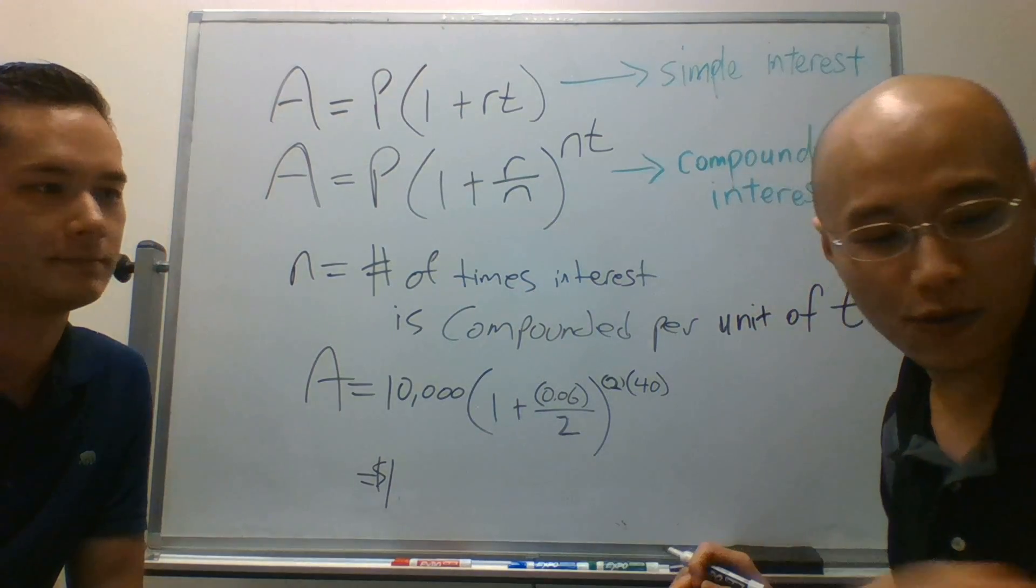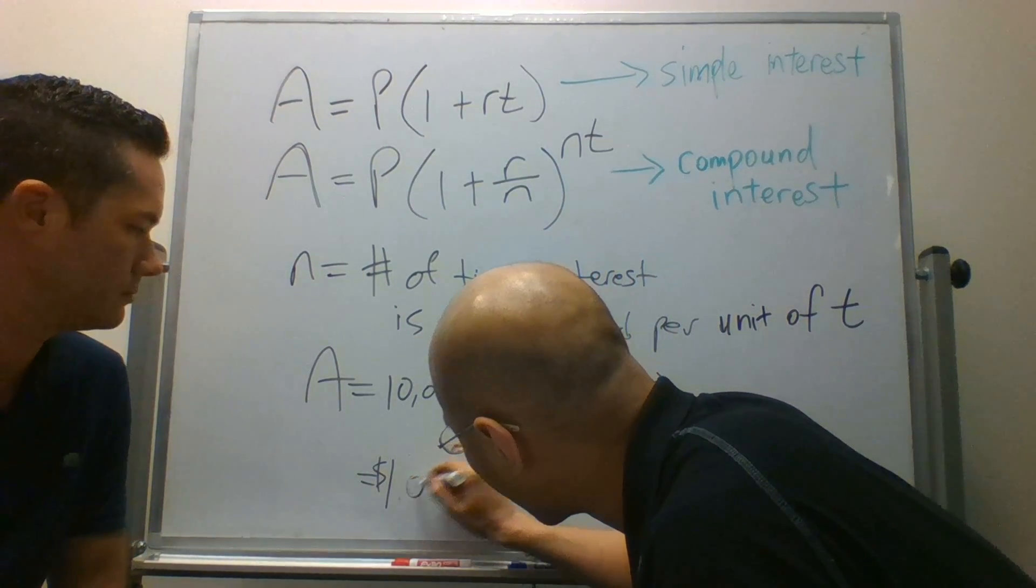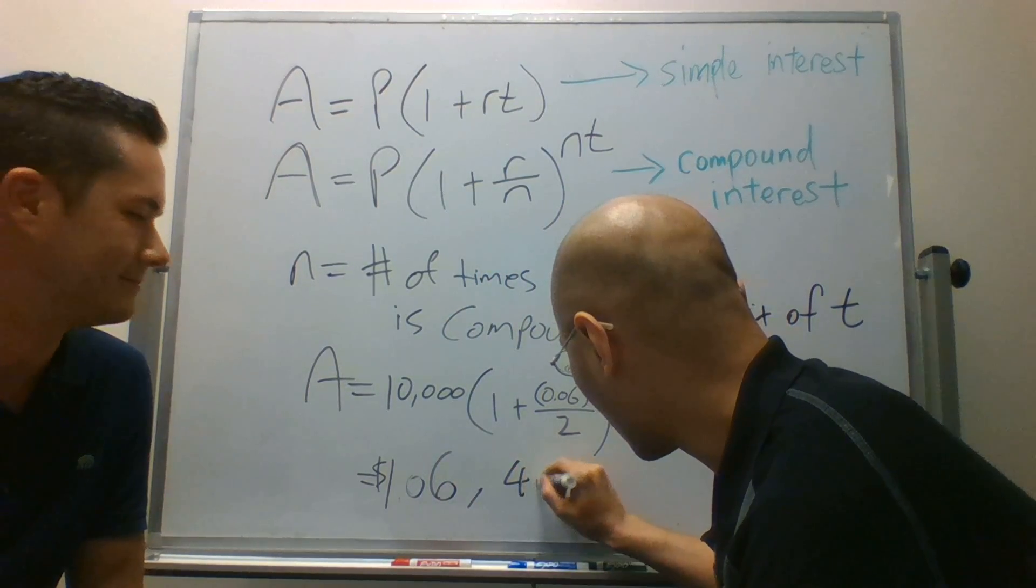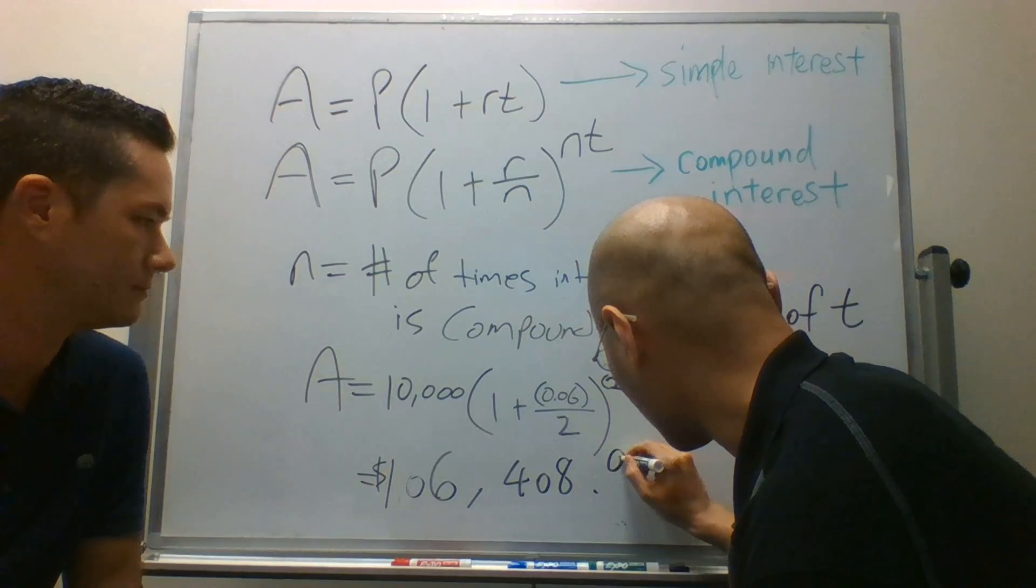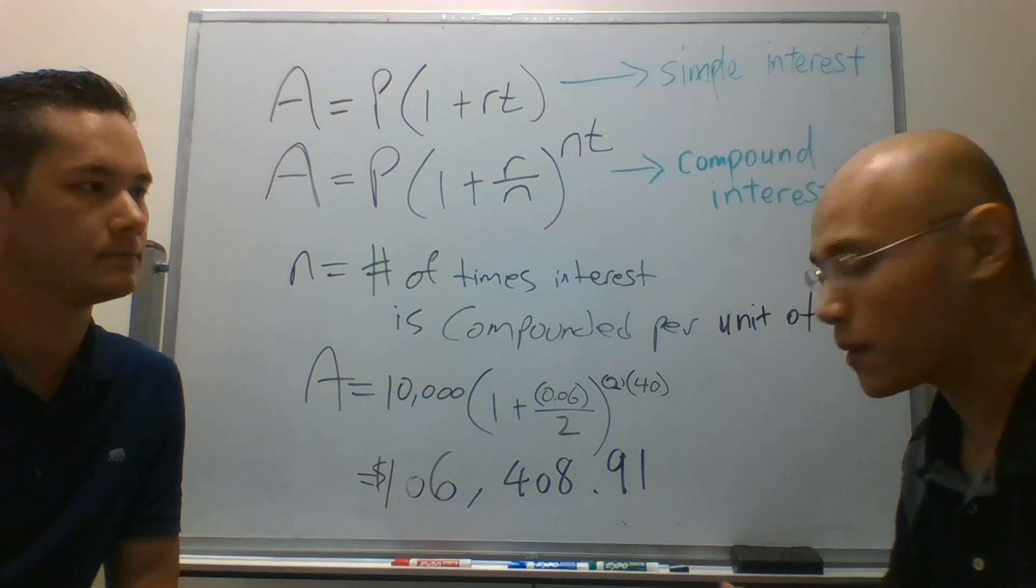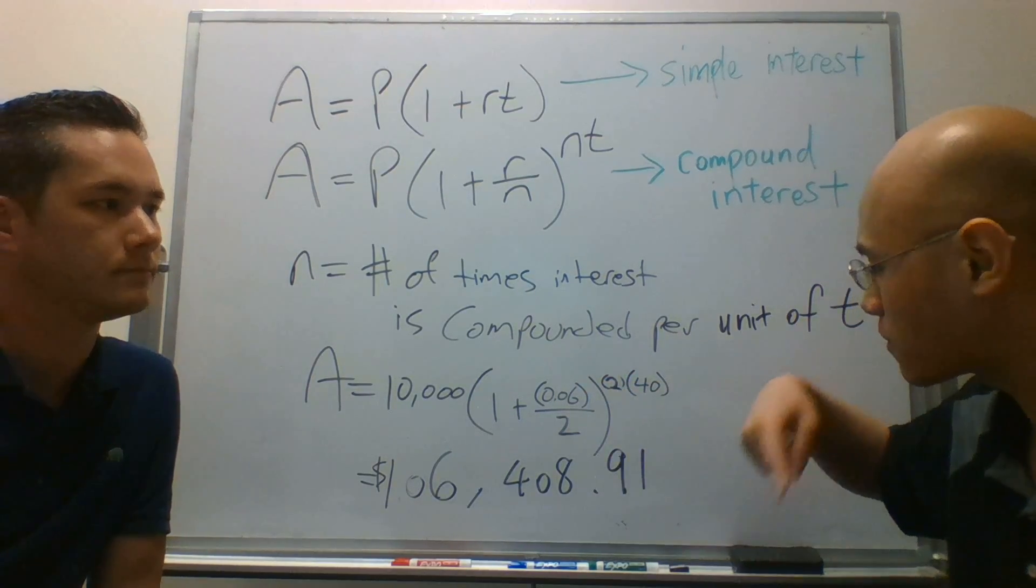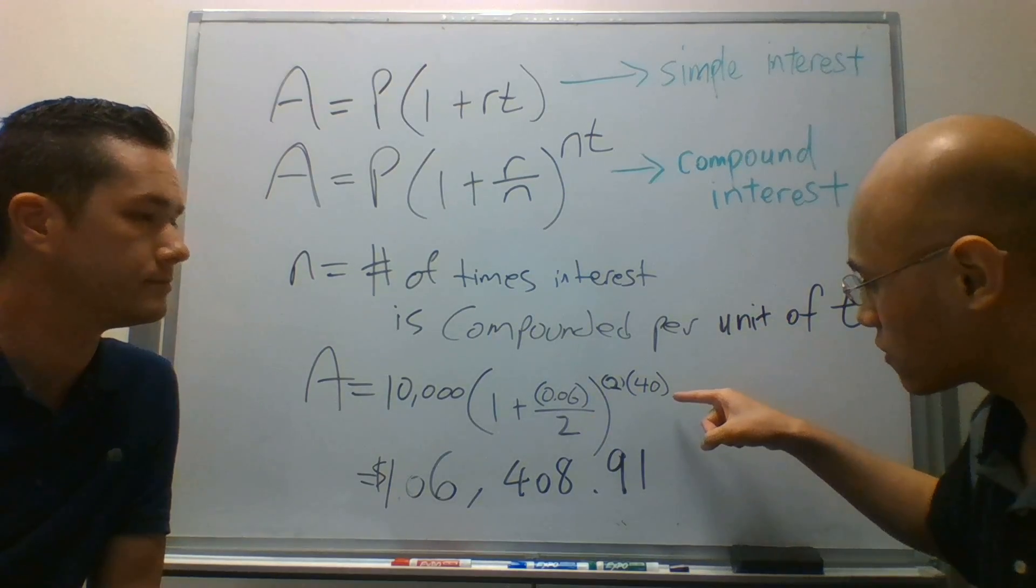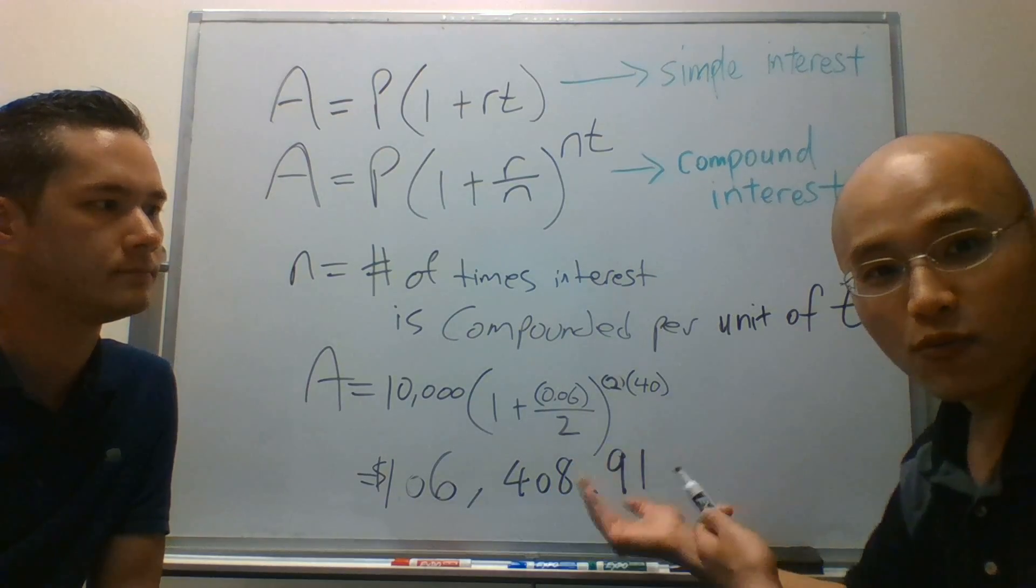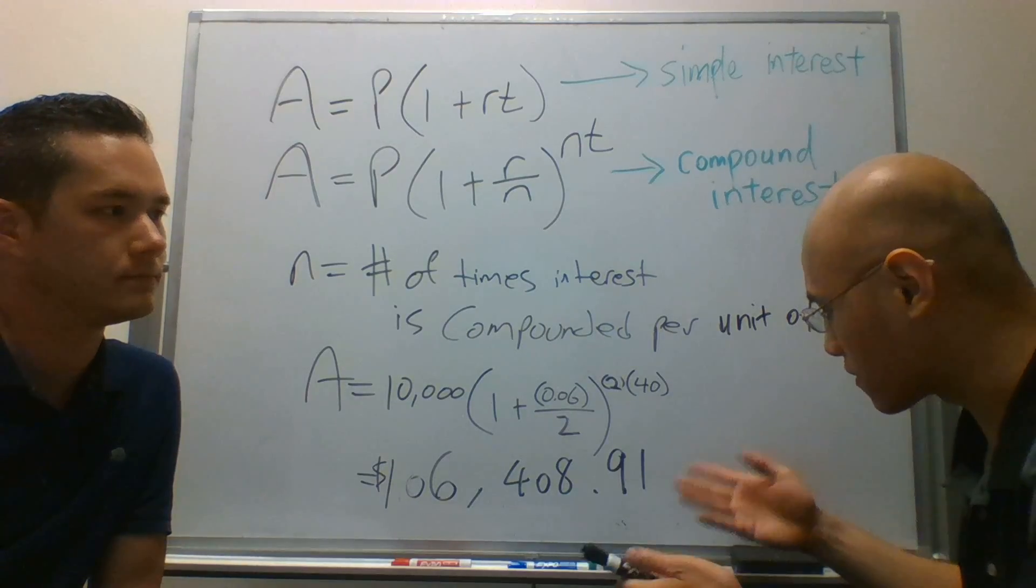One hundred six thousand, four hundred eight point nine one. So as Ben suggested earlier, it's a good idea for everybody at home to play around with these numbers - the interest rate, the number of times it's compounded, the number of years that we're using to grow this investment - just to see what you have at the end, the different variations of this result.